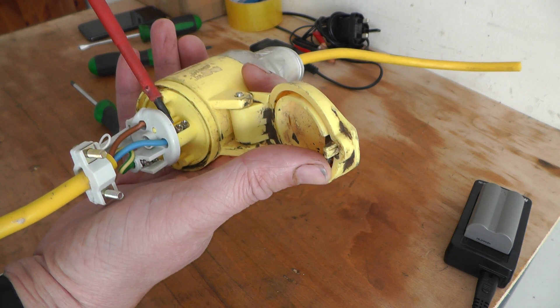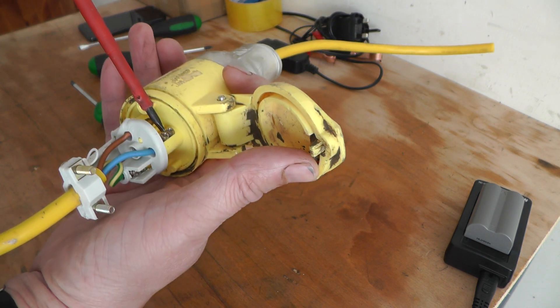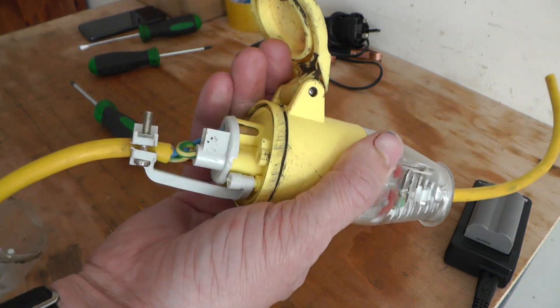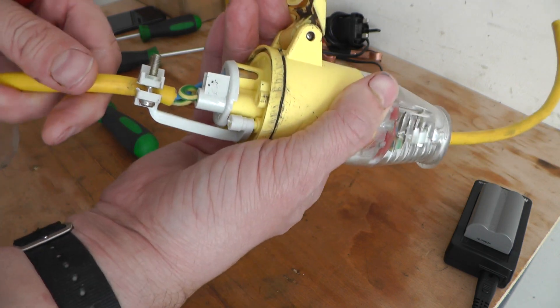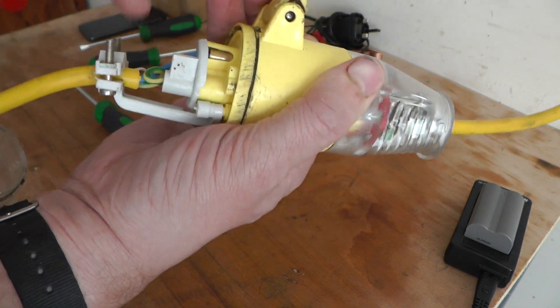Then you cut them all to the same size from there to there, wire them in. Then you curl your earth back so it's looped. Then if it pulls out and these two pull out, you've still got the earth connected.